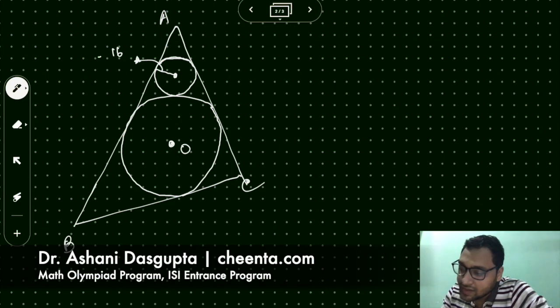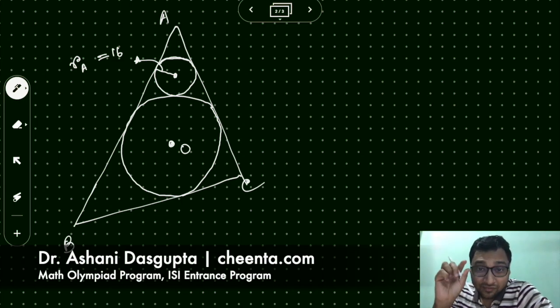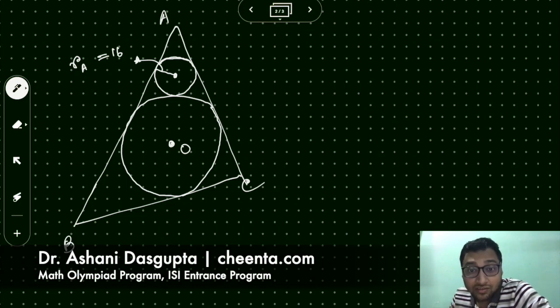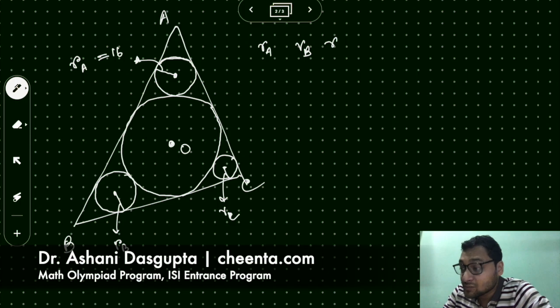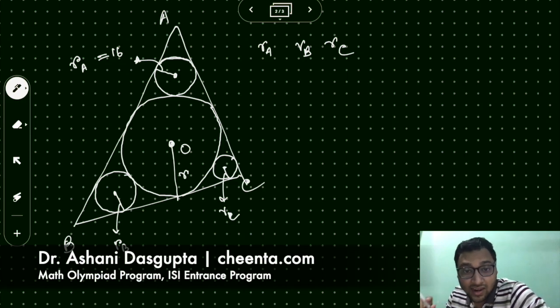And we have the other smaller circle, which is tangent to this in circle, as well as these two sides. And the radius of that is given to be 16. In fact, we can write this as RA because the circle is close to the vertex A. So we can use letters as well because we will find a general formula so that we can use RA and RB. This is RB, and this is RC. We can use these three information when we will find the length of small r.